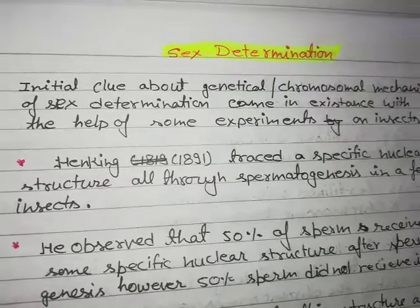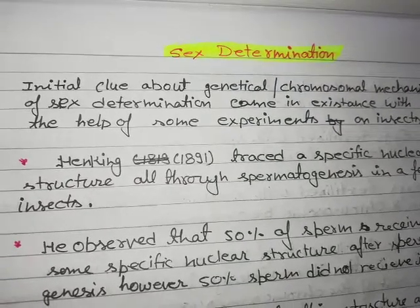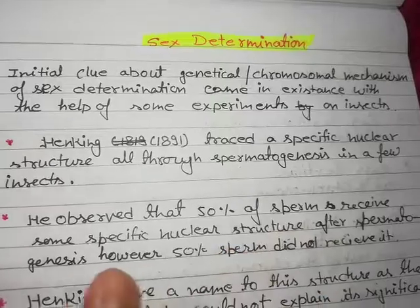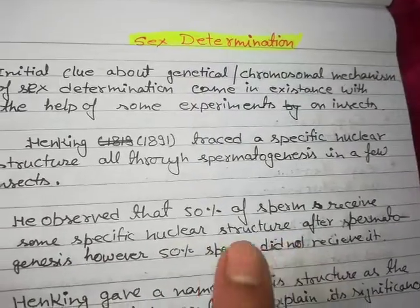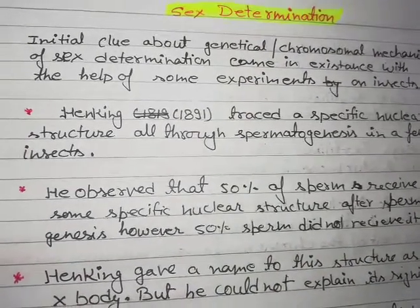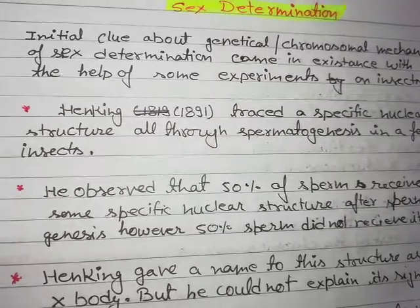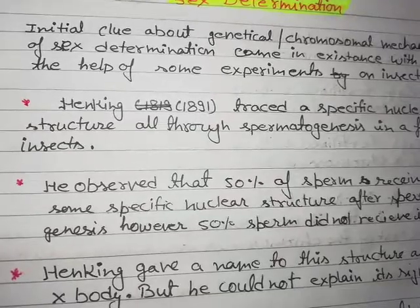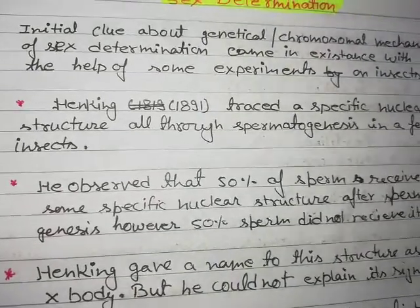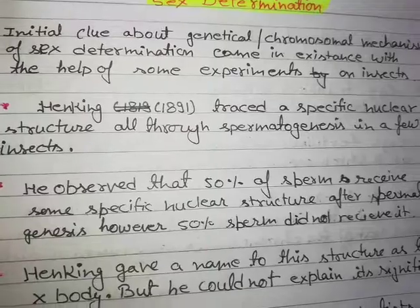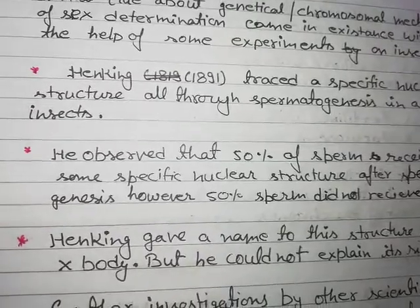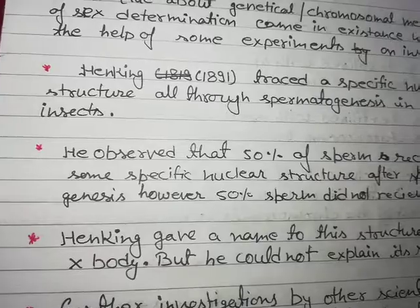He found out some special structures in some of the sperms of the insects. He observed that 50 percent of the sperm received some specific nuclear structure after spermatogenesis, however 50 percent of the sperm did not receive it. Spermatogenesis is the process in which sperm production takes place — a kind of meiosis after which spermatids or sperms are produced.